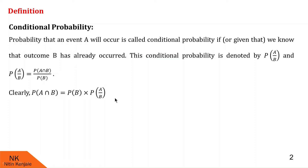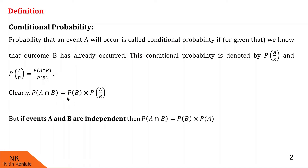Note that here A and B are dependent events. If A and B are independent events, meaning the occurrence of one event does not affect the occurrence of the other, then probability of A given B is simply probability of A, because it is unaffected by the occurrence of B. Therefore, in that case, probability of A intersection B is given by probability of B times probability of A.